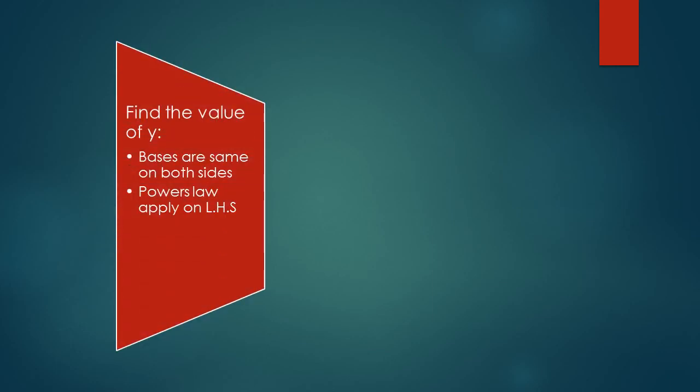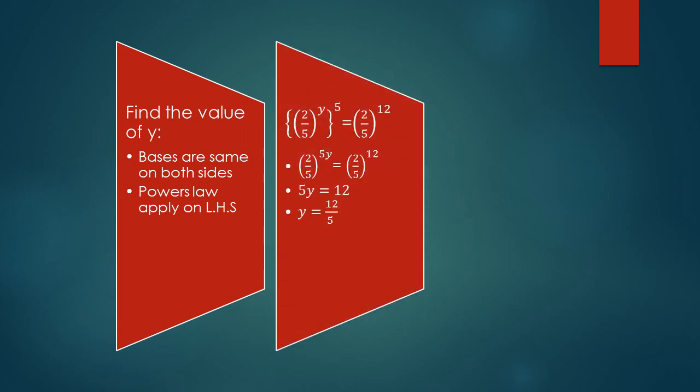Now, find the value of y. On both sides, you can see in the question 2 upon 5 and 2 upon 5 are the same. But on the left hand side, there are 2 powers, more than 1 power. So we use product law. y into 5 becomes 5y. Right hand side remains same. In next step, 2 upon 5 and 2 upon 5 are cancelled out. These are same bases.